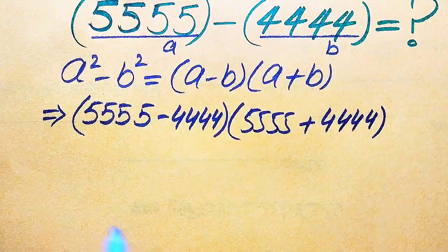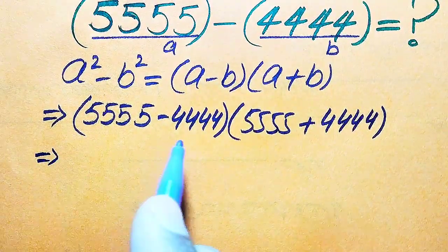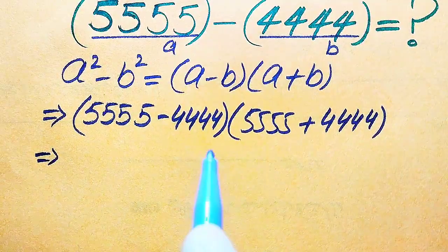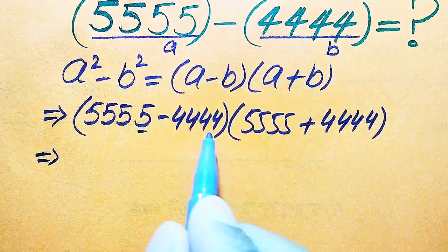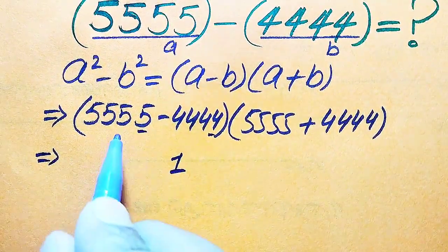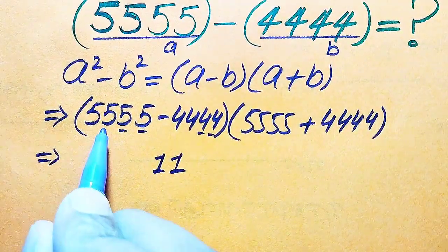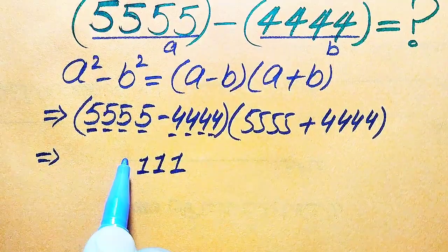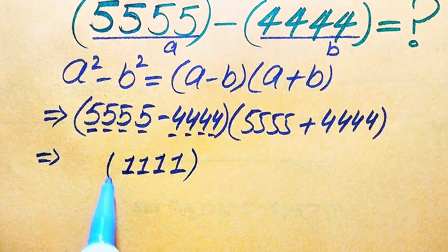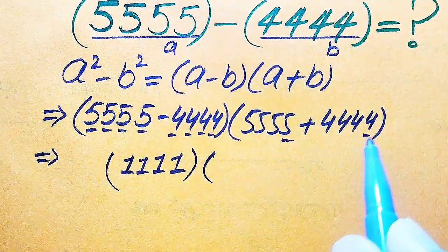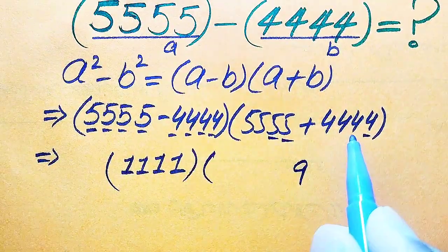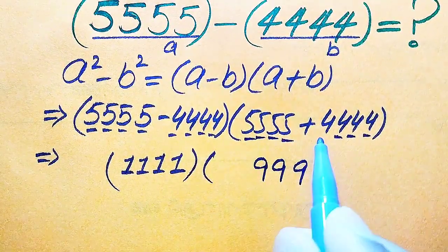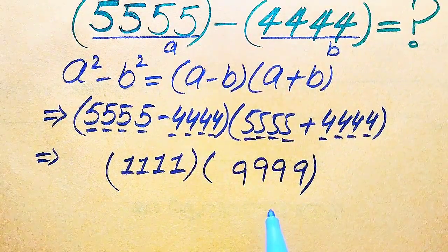In the next step, we first subtract these two values and then sum them up. For the subtraction: 5 minus 4 is 1, 5 minus 4 is 1, 5 minus 4 is 1, 5 minus 4 is 1, giving us 1111. For the addition: 5 plus 4 is 9, 5 plus 4 is 9, 5 plus 4 is 9, and 5 plus 4 is 9, giving us 9999.